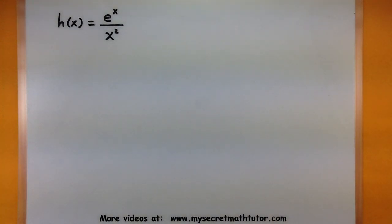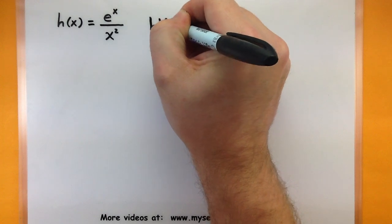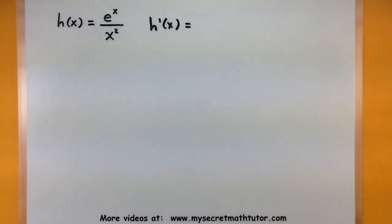Alright. So in this first one, we want to take the derivative of e to the x all over x squared. So let's write down what we want to do. So I want to find the derivative of my function. And just to make things a little bit easier, let's go ahead and recognize our top function and our bottom function.